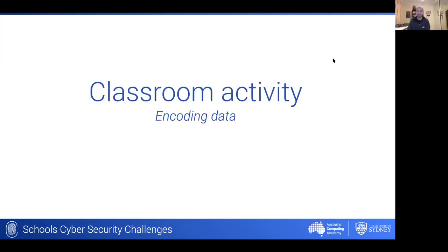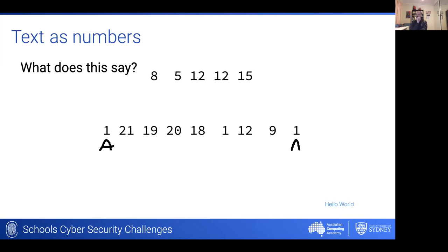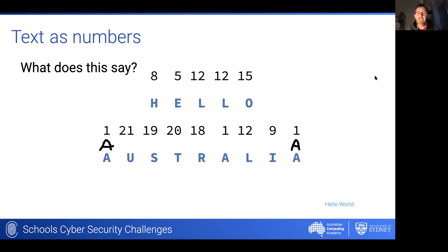Encryption is actually in school curricula right up to Year 11 and 12, so you'll be able to find a place to drop it into your existing program. Here's a simple classroom activity to introduce the idea: What does this say? In the Zoom chat, Will reckons the first word is 'Hello' — quick on the buzzer there Will, good work. And Brenton reckons the second word is 'Australia' — and sure enough, what we've done is represented each letter as a number using alphabetical order and the position of each letter in the alphabet.